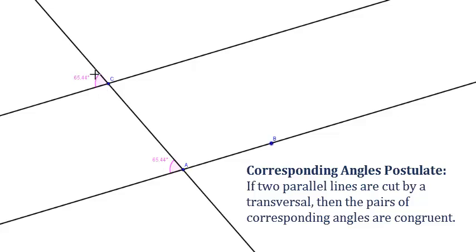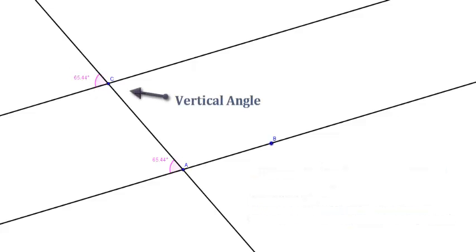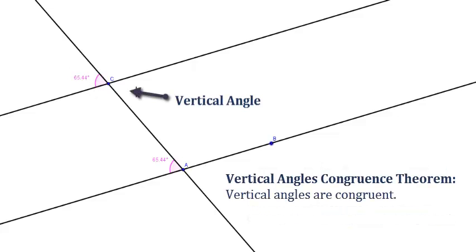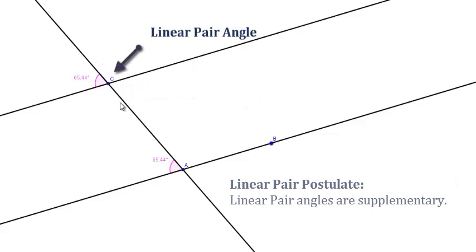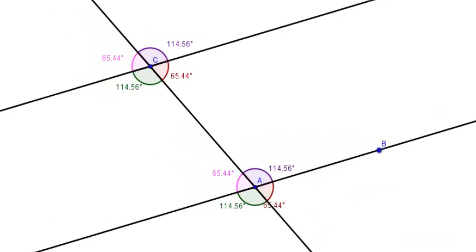You can also notice with the diagram that every angle here has a vertical angle, which is also congruent. And every angle also has a linear pair, which is supplementary. So if we take a look at all of these angles, we see that we have some other relationships.